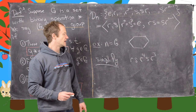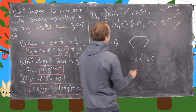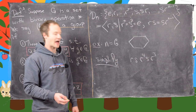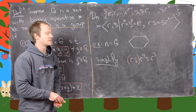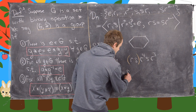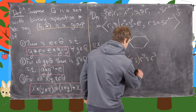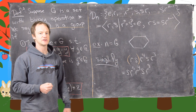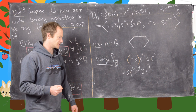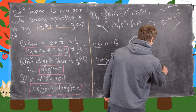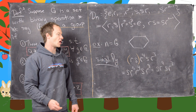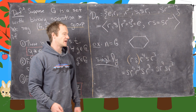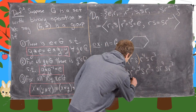Our goal is to get all s's to the left. This s is to the right of this r, so let's group and switch: r·s equals s·r to the n minus 1, which is s·r to the 5, times r to the 4 times s·r cubed. By exponent rules, that's s·r to the 9th·s·r cubed. But r to the 6 equals the identity, so r to the 9 equals r cubed. This gives us s·r cubed·s·r cubed.